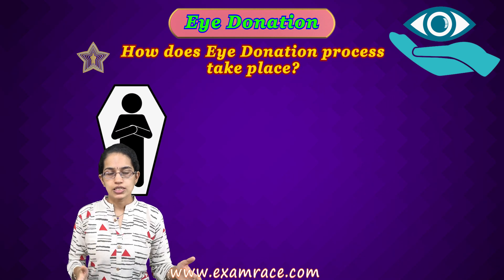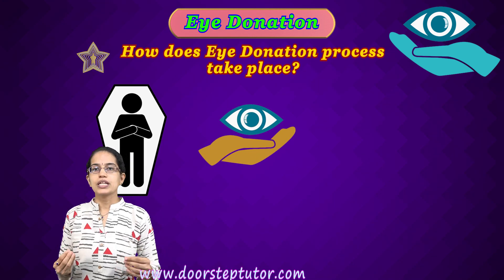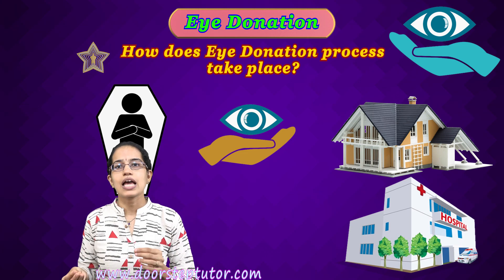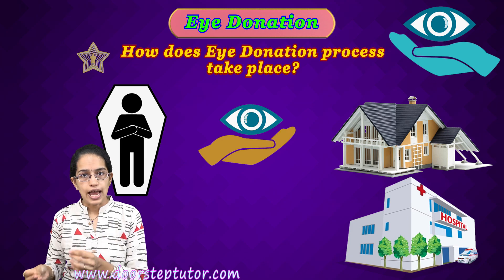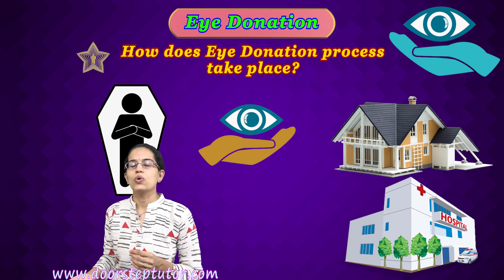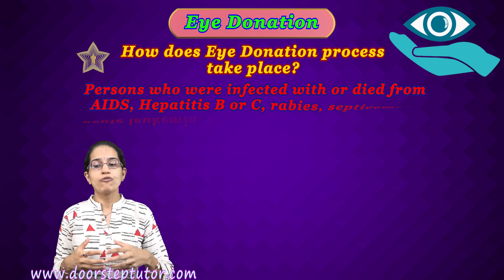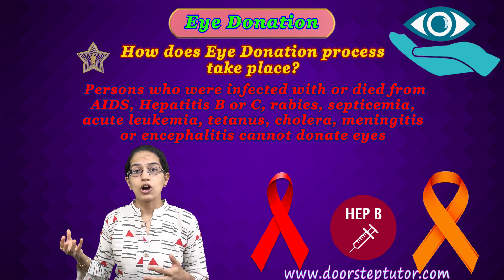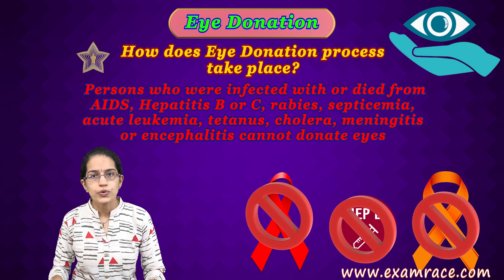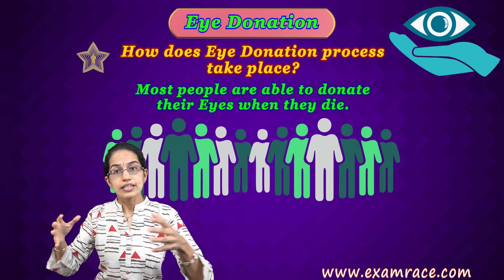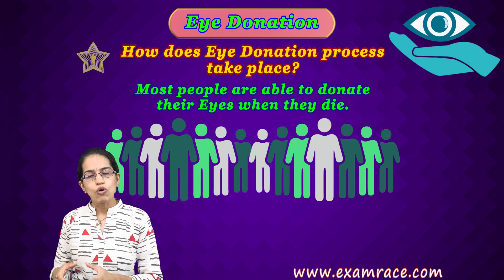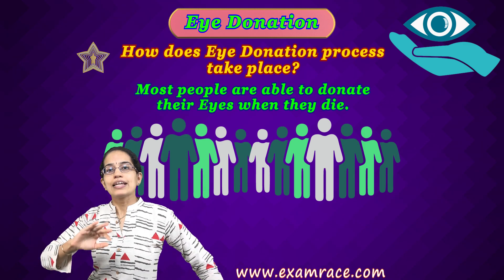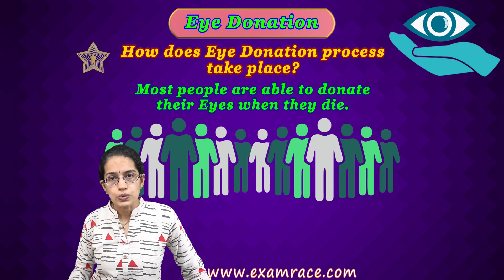Immediately after death, within 4 to 6 hours, the eye needs to be recovered and preserved. This can happen either at home or at the hospital and takes merely 10 to 15 minutes. If the deceased has agreed to donate the eye or noted it in their will, the process can go ahead. People suffering from acute illnesses such as AIDS, hepatitis, leukemia, cholera, meningitis, or any communicable disease cannot donate the eye. Eye donation can be done by any age group and any gender.